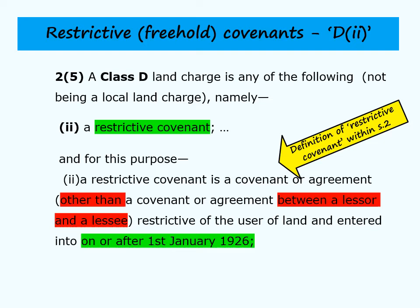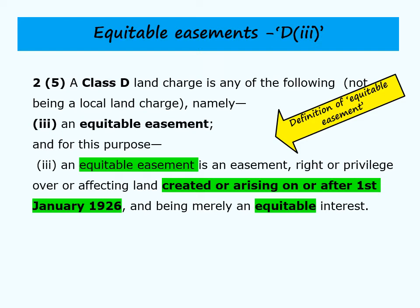Note that only restrictive covenants created after the system was introduced — post 1925 — can be registered within section 2. All the information is in the statute, so you don't have to try to remember it if you have your property law statute book with you in an exam. As for equitable easements, only post-1925 equitable easements can be registered as a D3 land charge. If it's a legal easement it will bind the purchaser anyway under the rule that legal rights bind the whole world, so there's no need to protect it. But an equitable easement should be protected by registering a land charge against the name of the estate owner.